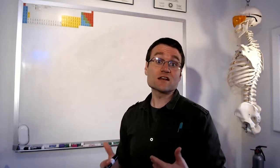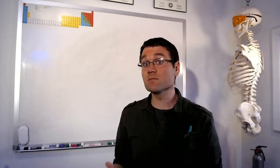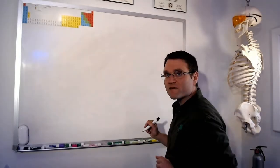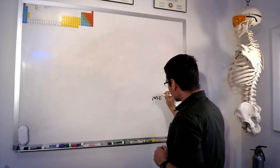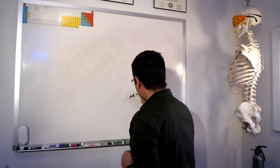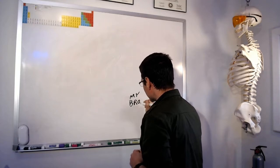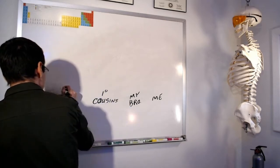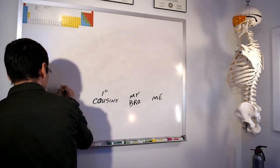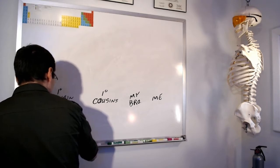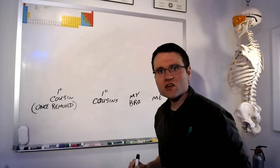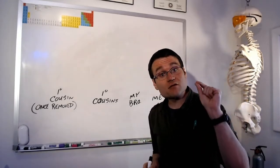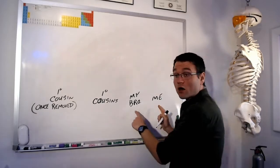The way that we check to see how closely related two different species are is actually much the same. So how do DNA tests work? Let's say a whole bunch of people in my family take a DNA test — there's me, there's my brother, there's my first cousin, and then there's my first cousin once removed.